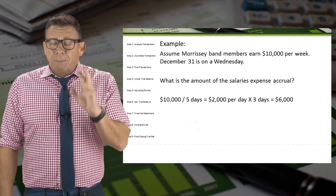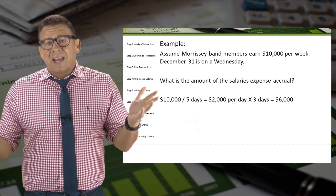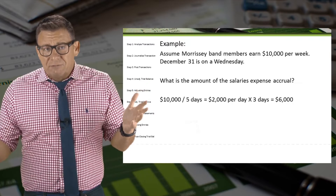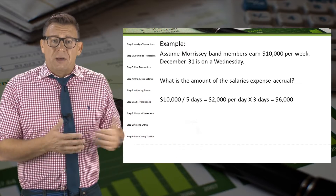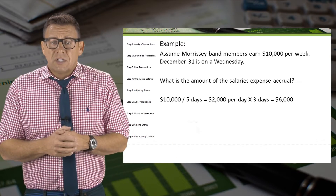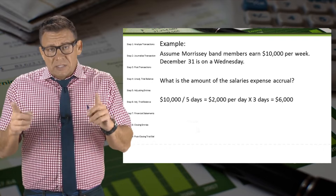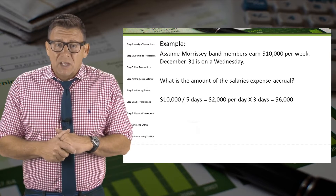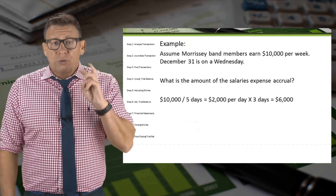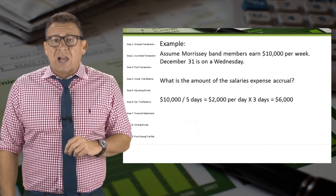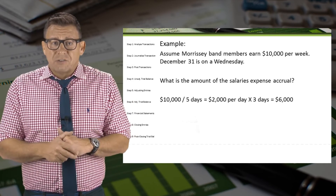If the band members make $10,000 per week, let's divide that by 5 to get a daily amount of $2,000. December 31st is a Wednesday, so that means we need to accrue 3 days of salary for a total of $6,000.